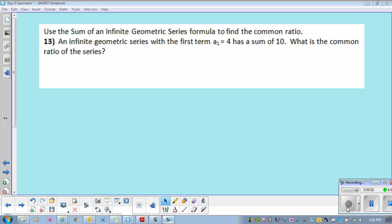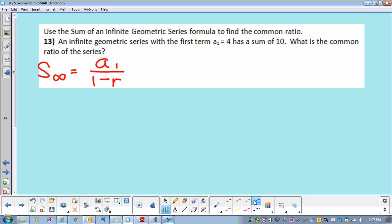For 13, use the sum of the infinite geometric series formula to find the r. Sometimes they give you the sum and they want you to find the r. So that's how you do that. So our infinite geometric series formula looks like this. So think about what they give you. Here they said first term a sub 1 equals 4. Sum of 10. You need to find r.